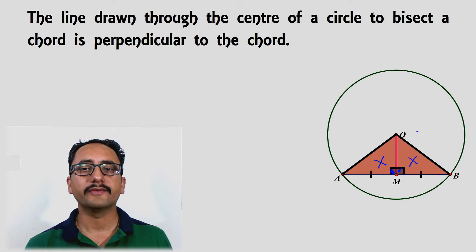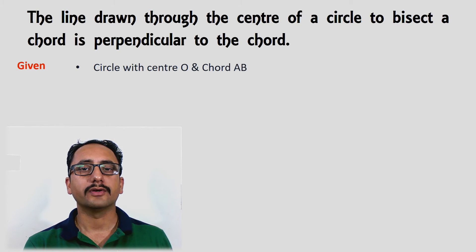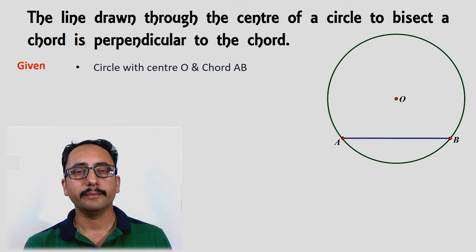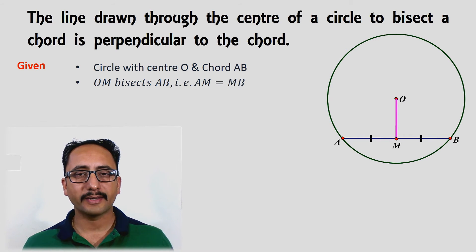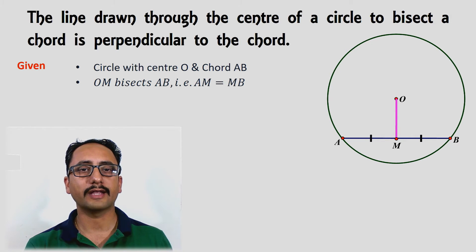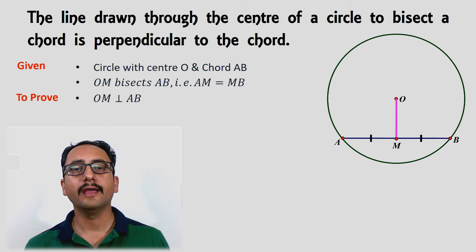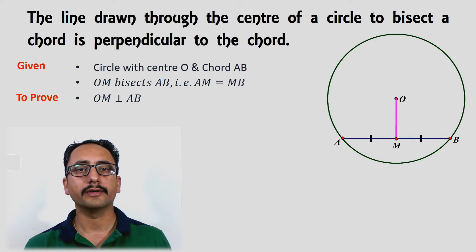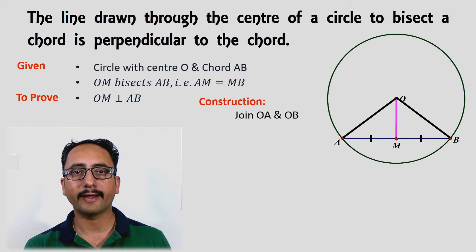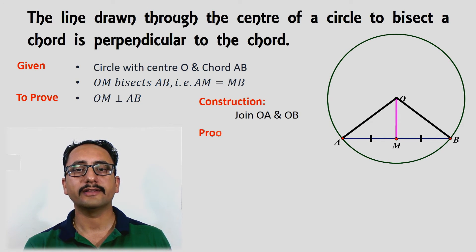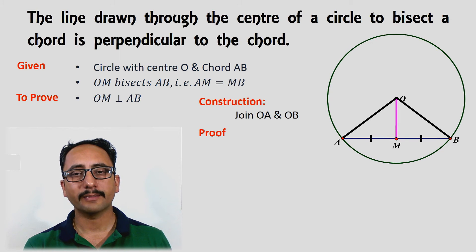Let's discuss the step-by-step proof. What is given: a circle with center O and chord AB, and OM is drawn to bisect AB, so AM equals MB. For the construction, we join OA and OB to complete the triangles, and then we will prove that these triangles are congruent.